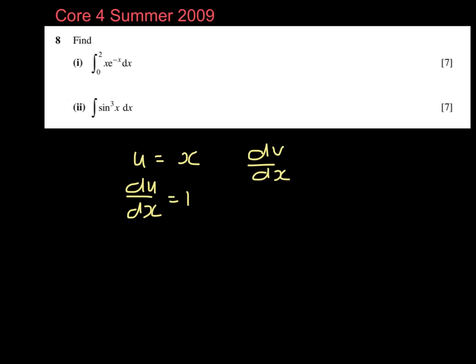dv dx is e to the minus x. And whenever I integrate that, I'm going to get minus e to the minus x. So I'm now integrating from 0 to 2, x e to the minus x dx. Remember this formula is in your formula booklet.